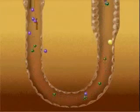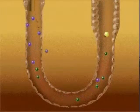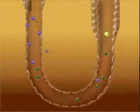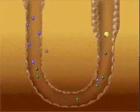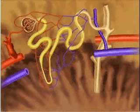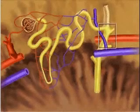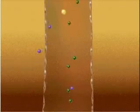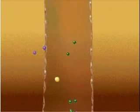Final concentration of the fluid occurs in the collecting ducts, as it must travel back through the concentrated interstitium of the medulla on its way to the calyces. Urine is concentrated even further in the collecting ducts, which must transport urine back through the concentration gradient formed by the nephron loop.